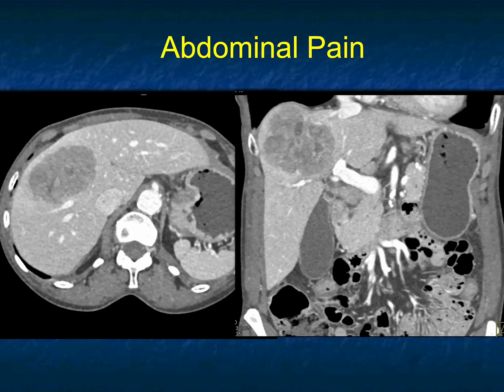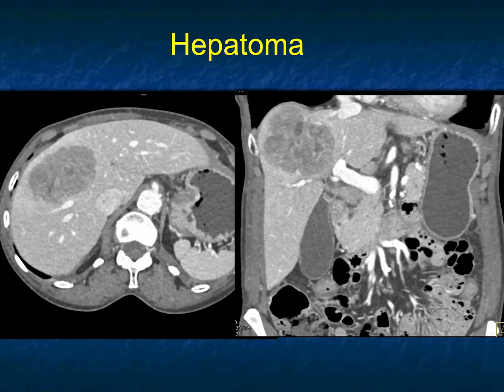It looks more like a primary hepatic tumor, be it a cholangiocarcinoma or hepatoma. It also could be a metastasis. It doesn't have the cystic changes of an abscess. This was a hepatoma. Sometimes you have hepatomas in non-cirrhotic livers — this liver really doesn't look cirrhotic. Probably 80% of hepatomas you'll see, the liver will be cirrhotic. That can be a helpful way of distinguishing between hepatoma, cholangiocarcinoma, and perhaps metastasis.